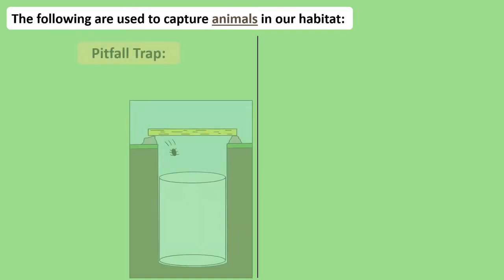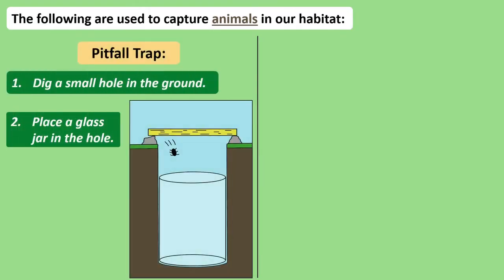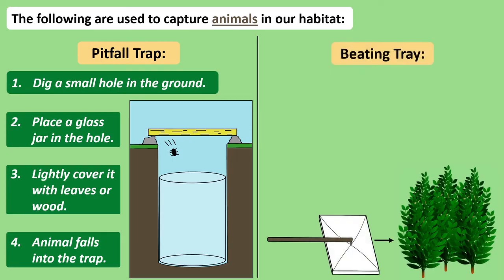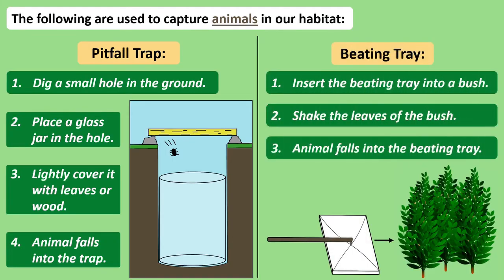We can create a pitfall trap by digging a hole in the ground with a trowel and placing a container such as a glass jar inside it. Cover the hole with leaves or even a thin piece of wood — over time, small insects will crawl under the wood and fall into the pitfall trap. A beating tray works best by inserting it into or underneath a tree or a bush; shake the branches and insects will fall off the leaves and onto the beating tray.